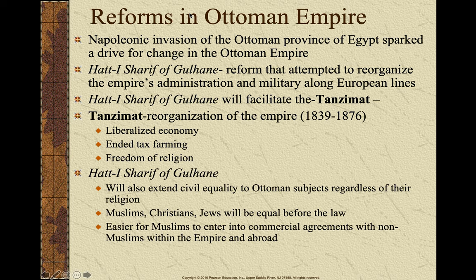We're also going to see within these reforms — the Tanzimat and the Hatt-i Sharif of Gülhane — an extension of civil equality to the Ottoman subjects regardless of their religion. So freedom of religion — Muslims, Christians, and Jews will be equal before the law. And it's going to be easier for Muslims to enter into commercial agreements with non-Muslims within the empire and abroad. Big picture here, ladies and gentlemen: Westernization and Enlightenment influence within the Ottoman Empire, in hopes of preserving their empire — which we know is not going to be possible.